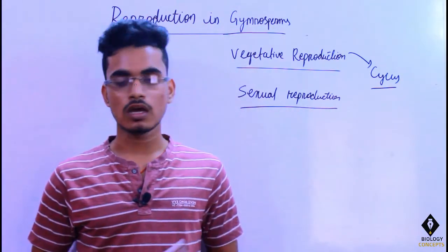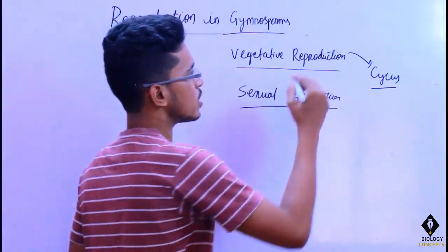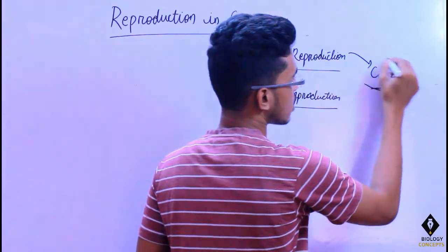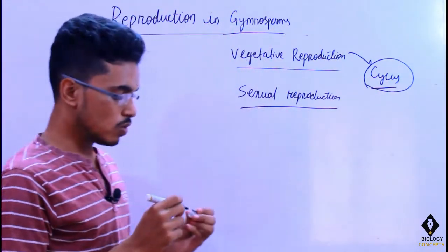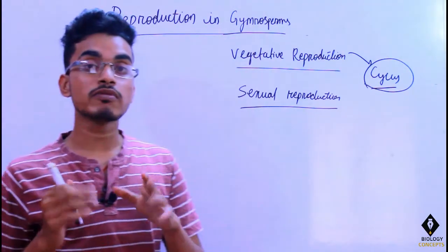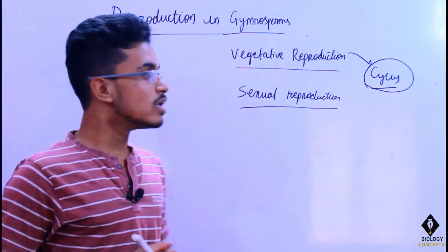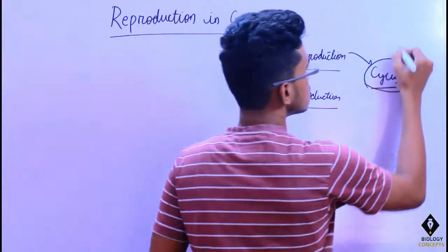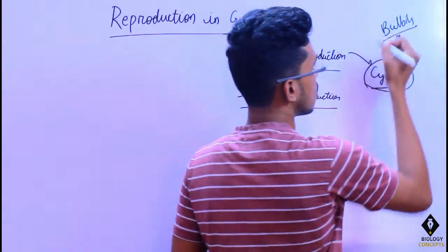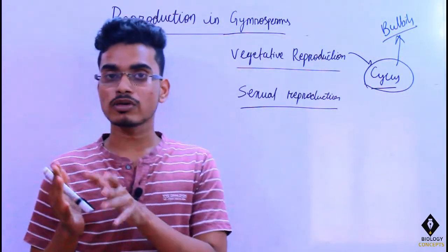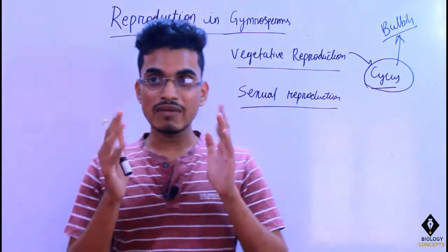Vegetative reproduction is very rare in gymnosperms. It has been known that vegetative reproduction is found in species of Cycas. The type of vegetative reproduction seen in Cycas is bulbils. Bulbils are the type of vegetative reproduction which has been seen in Cycas.